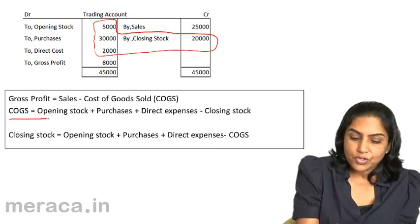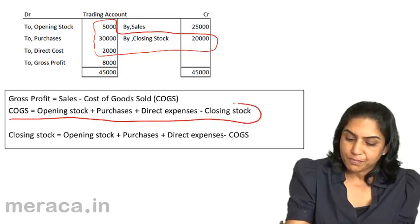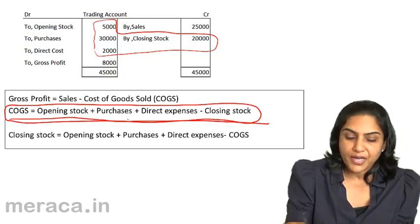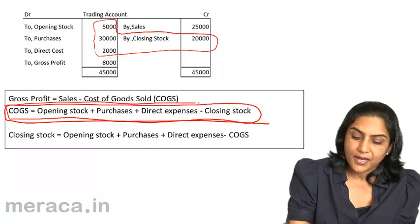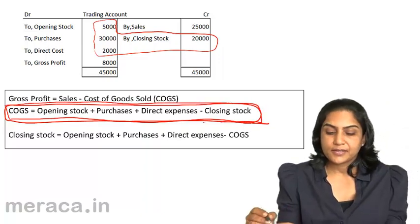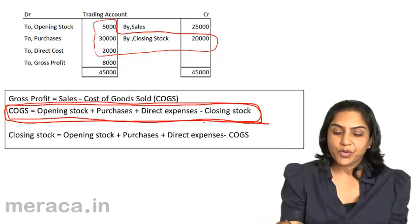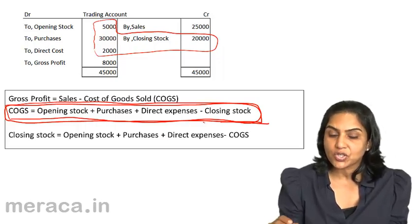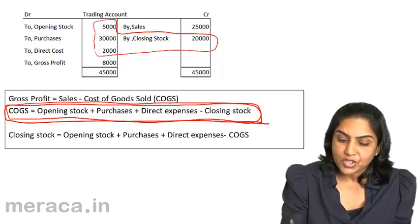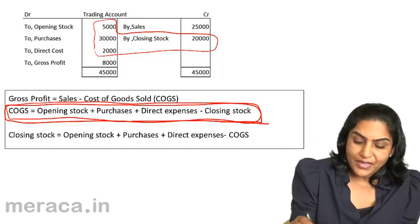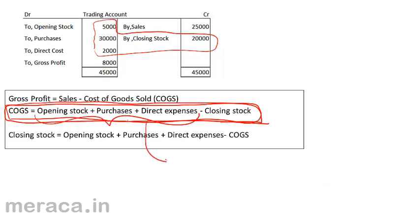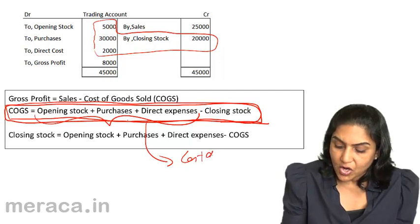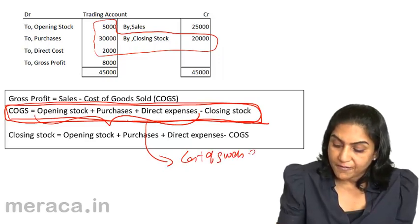Cost of goods sold equals opening stock plus purchases plus direct expenses minus closing stock — we need to memorize this very thoroughly. Other equations can be worked out from this. Gross profit equals sales minus cost of goods sold. If we break this up, opening stock plus purchases plus direct expenses is actually the cost of goods available for sale.